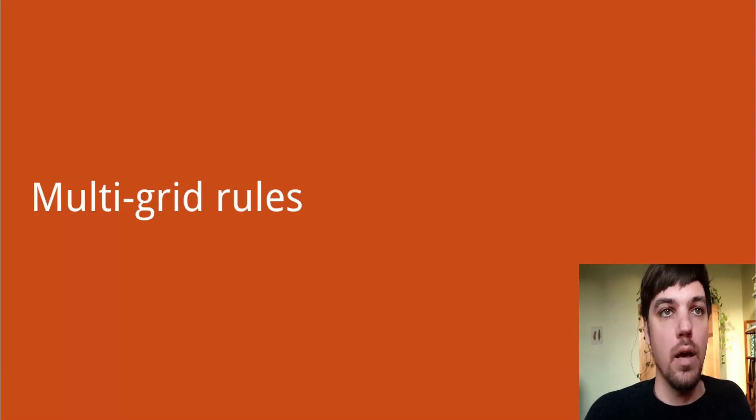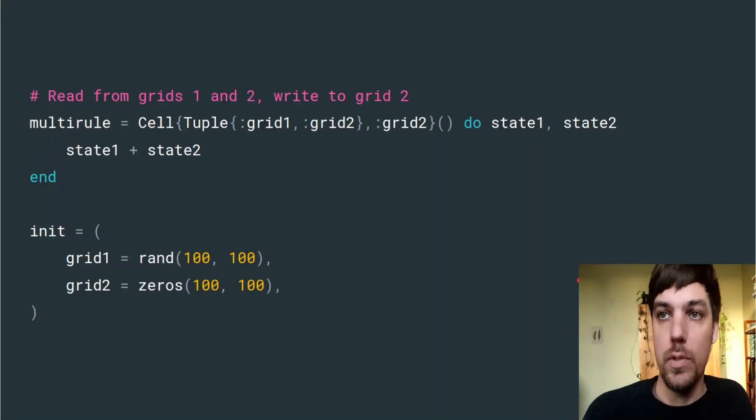Lastly, looking at rules, we'll look at multi-grid rules. All these rules we've looked at use a single grid, but we can specify using multiple grids using the type system. Here we specify that we want inputs from grid 1 and grid 2, and we want to write to grid 2.